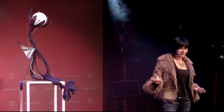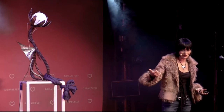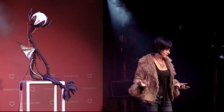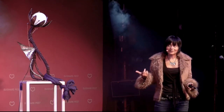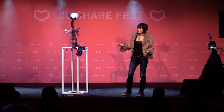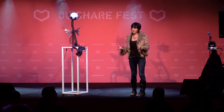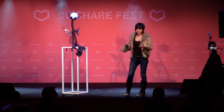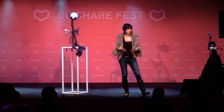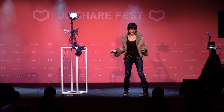Even though it does not actually have a physical embodiment, the DAO also qualifies as a blockchain-based life form in that it is autonomous — as a leaderless organization that is regulated only through its code. It is also self-sufficient because it is able to collect funds in order to actually ensure the ability to operate over time. And of course, it is also capable of reproducing itself because the model of the DAO can actually be taken, modified, and forked in order to give life to a whole new variety of decentralized autonomous organizations.